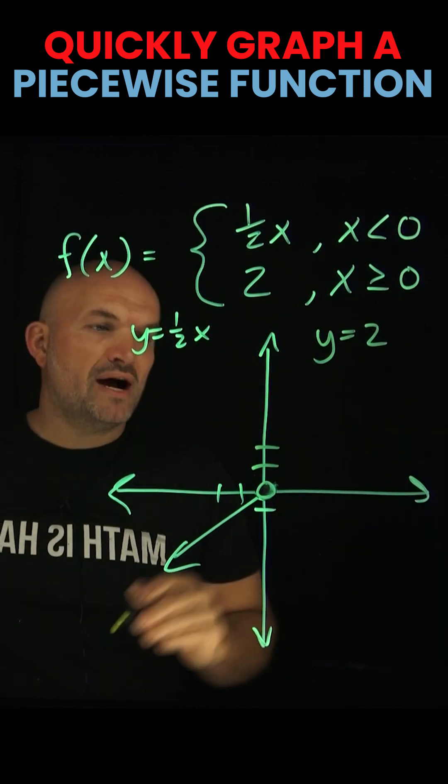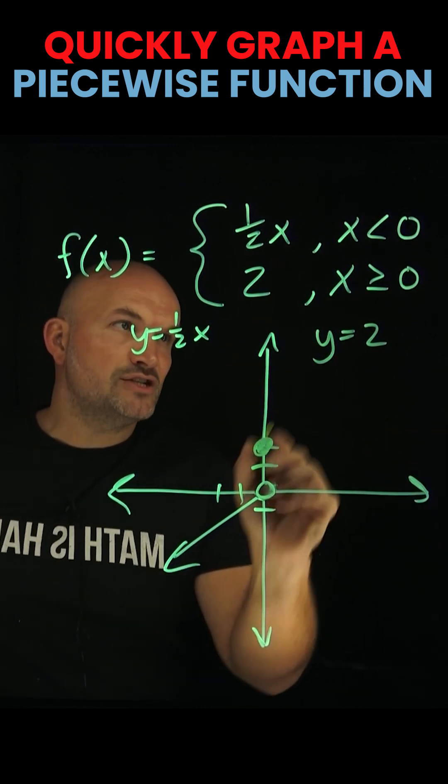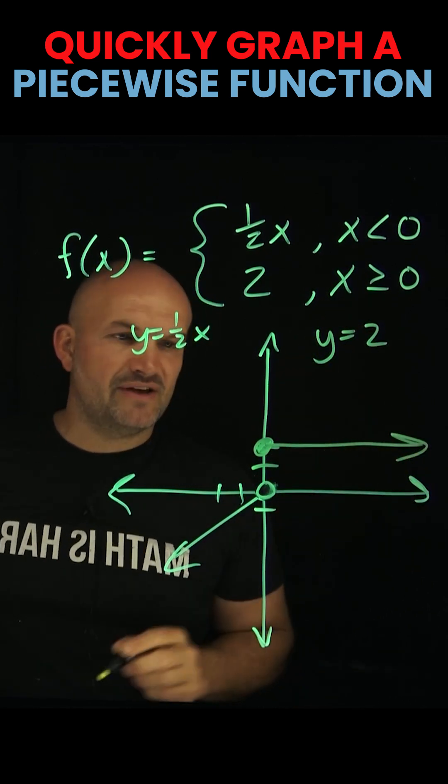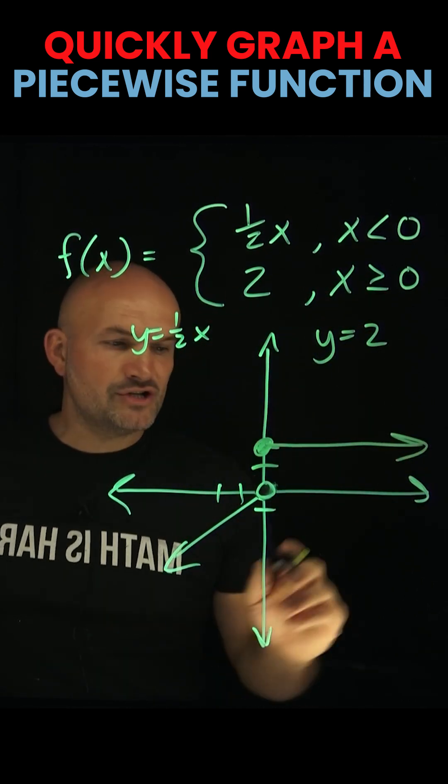To graph the relationship y = 2, we're going to do a filled in circle because it's greater than or equal to, and we're just going to draw it to positive x values. And therefore, now we have a piecewise function.